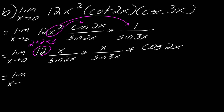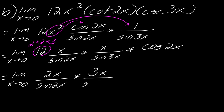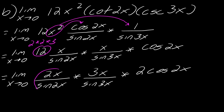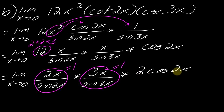Now I have the limit as x approaches 0 of 2x over sine of 2x, times 3x over sine of 3x, times 2 times cosine of 2x. Each of the first two pieces equals 1 by the theorem. Plugging 0 into cosine of 2x gives 1, so I'm left with 1 times 1 times 2 times 1. The answer is 2.